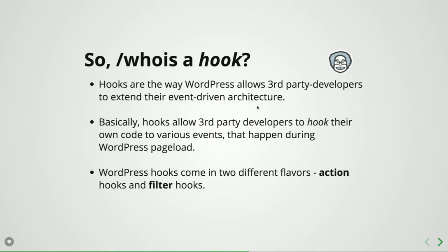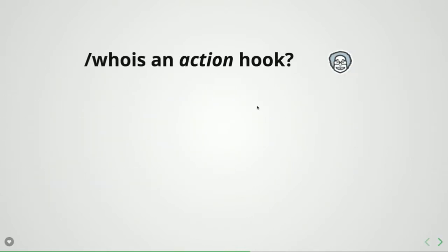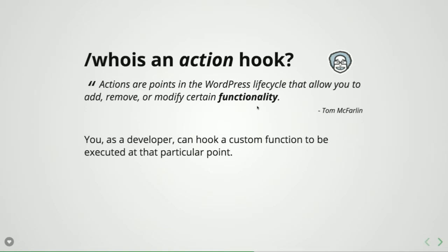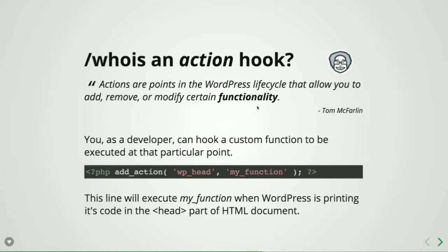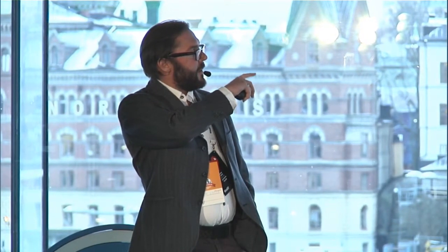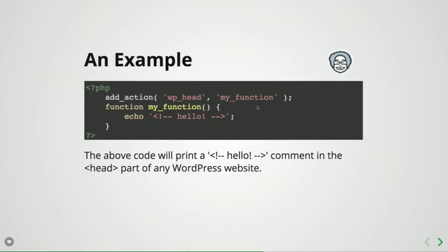There are two different types of hooks. Some are called action hooks, and some are called filter hooks. An action hook is a code point where you can insert your own functionality — you can modify how WordPress works, you can run some additional code there. For example, if you use add_action('wp_head', 'my_function'), it will execute my_function at the point where WordPress is printing out code in the HTML head section — where scripts, styles, and other stuff happens. In this example, you will have an HTML comment that says 'hello' in your head section.